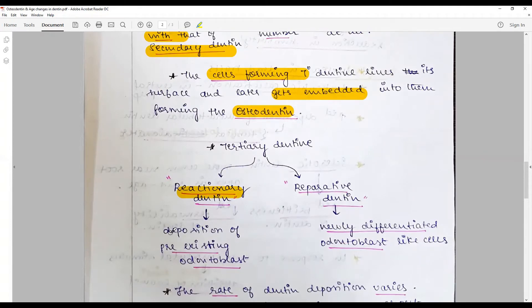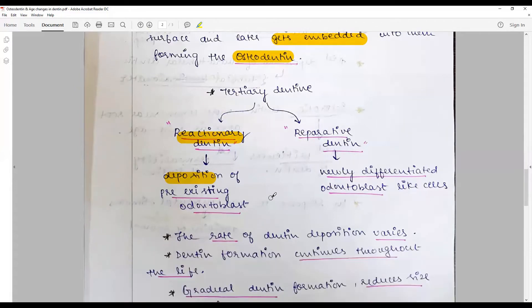Reparative: the odontoblast failed to survive, so a new layer of odontoblast is formed, but that is not also of that quality and that is called reparative dentine, with new odontoblast being differentiated.